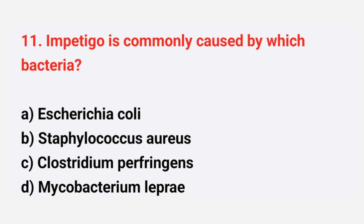Question number 11: Impetigo is commonly caused by which bacteria? The right answer is option B, Staphylococcus aureus.